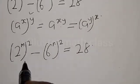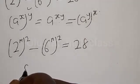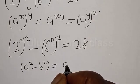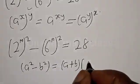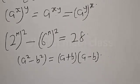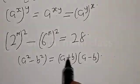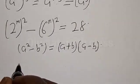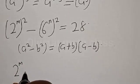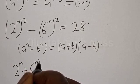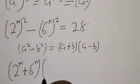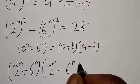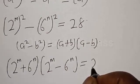Therefore this equation becomes 2 raised to power 2m minus 6 raised to power 2n is equal to 28. Now this is a difference of two squares. Remember, a squared minus b squared is the same as (a + b)(a − b). Here a is 2 raised to power m and b is 6 raised to power n. Therefore our equation becomes (2^m + 6^n)(2^m − 6^n) = 28.